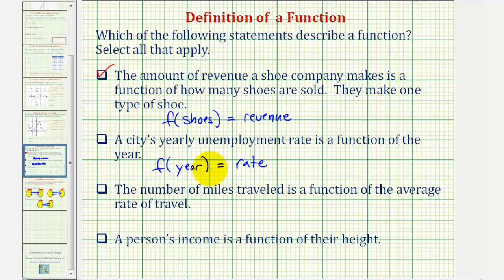There's no way that one year could have two yearly unemployment rates. So once again, this does describe a function.